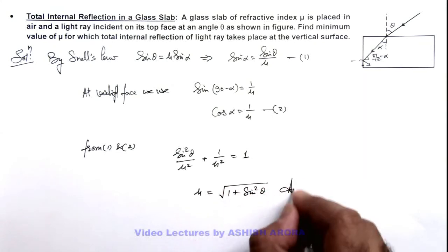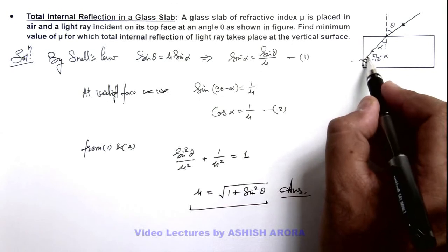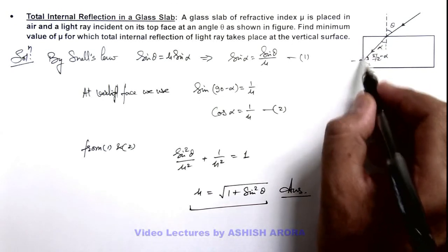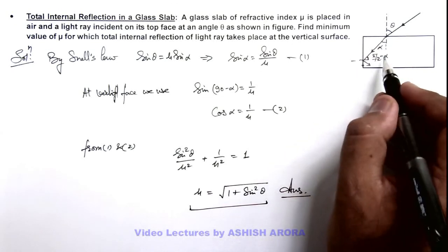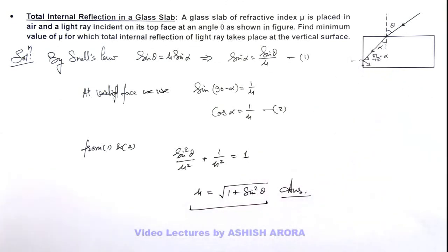That will be the answer for this problem. If the refractive index is equal to this value, this angle at which the refracted ray incident on the vertical face will be the critical angle for the surface, and it will be internally reflected from this face.